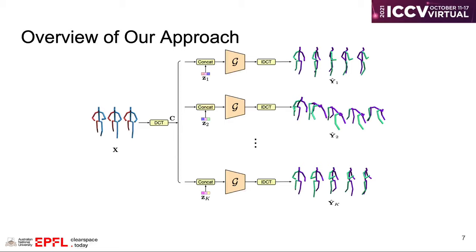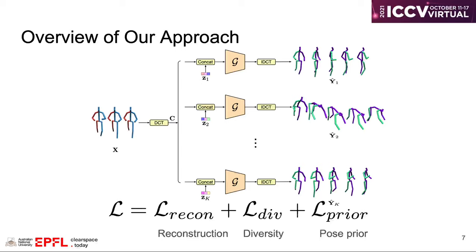Given a history X, our generator will first predict k different future motions with k random codes z sampled from a standard Gaussian distribution. Then our goal here is to explicitly encourage the diversity of those motions, while still ensuring them to be valid.